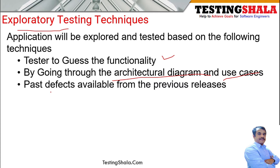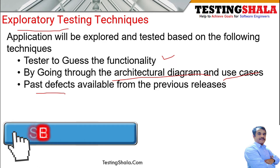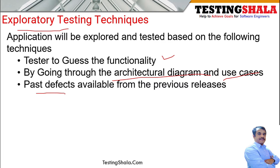The third technique is reviewing all past defects — going through the old defects available in the system or from previous releases to see what kinds of defects existed earlier. Based on that, we gain knowledge about the functionality and then perform exploratory testing.